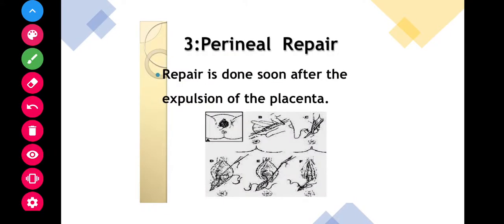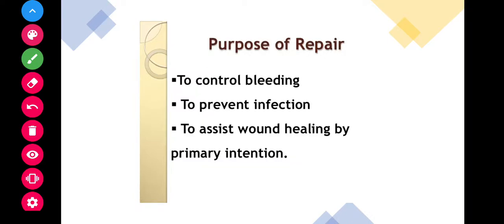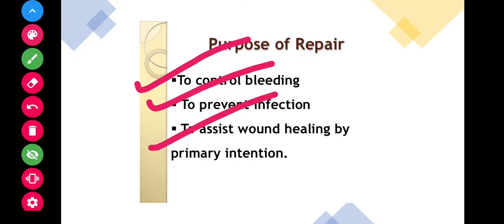Next, perineal repair and suturing. Repair is done soon after the expulsion of the placenta to avoid heavy hemorrhage or bleeding. The purpose of repair is to control the bleeding, to prevent infection, and to assist wound healing by primary intention.